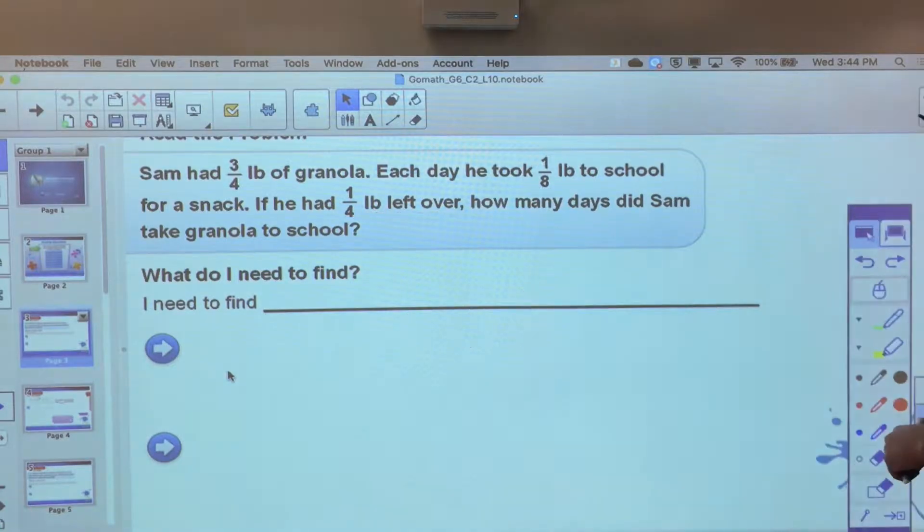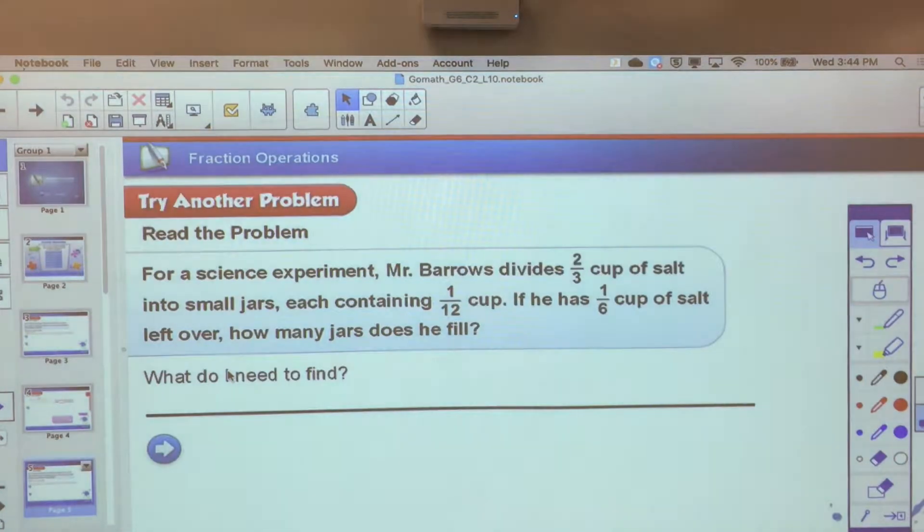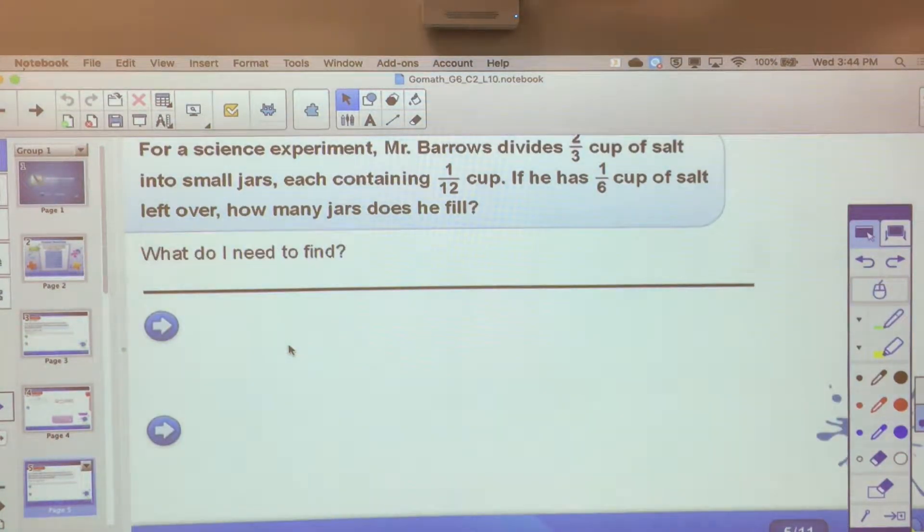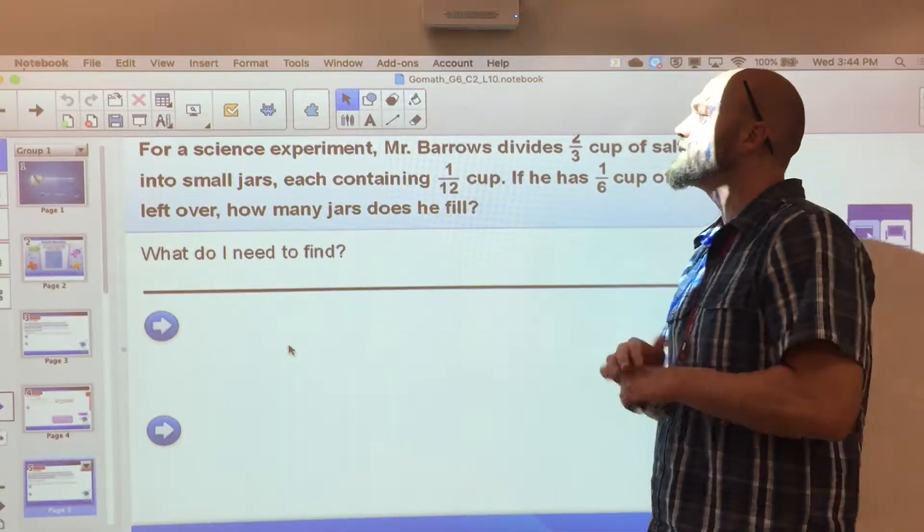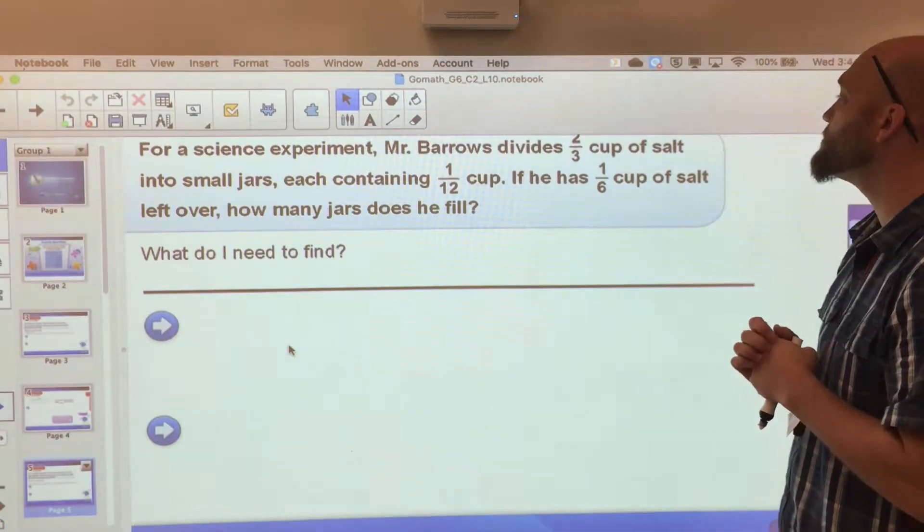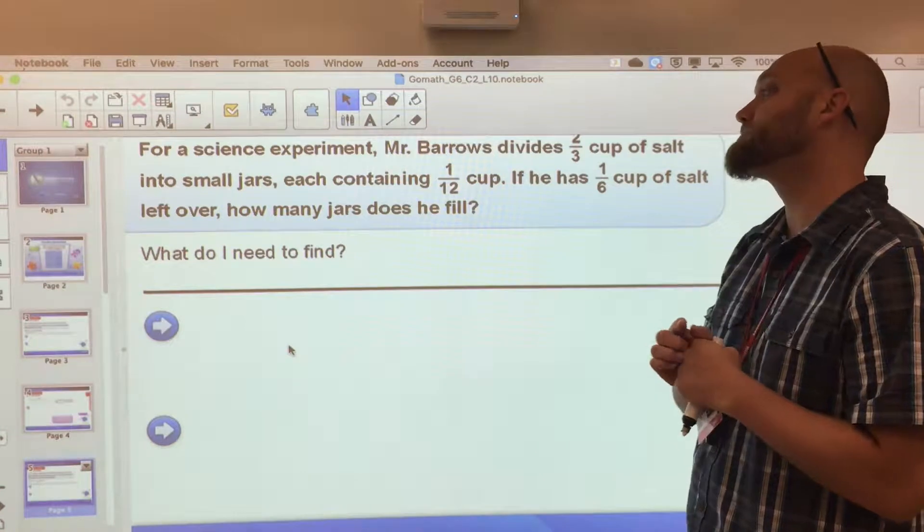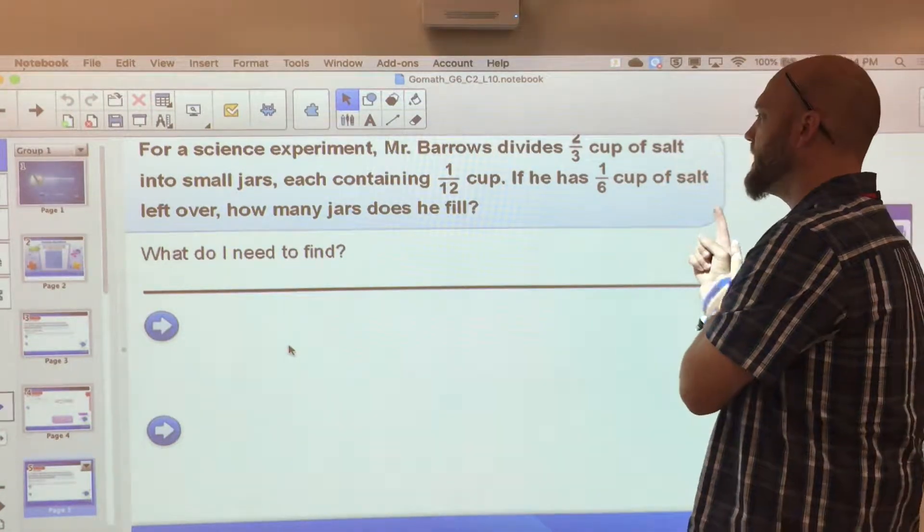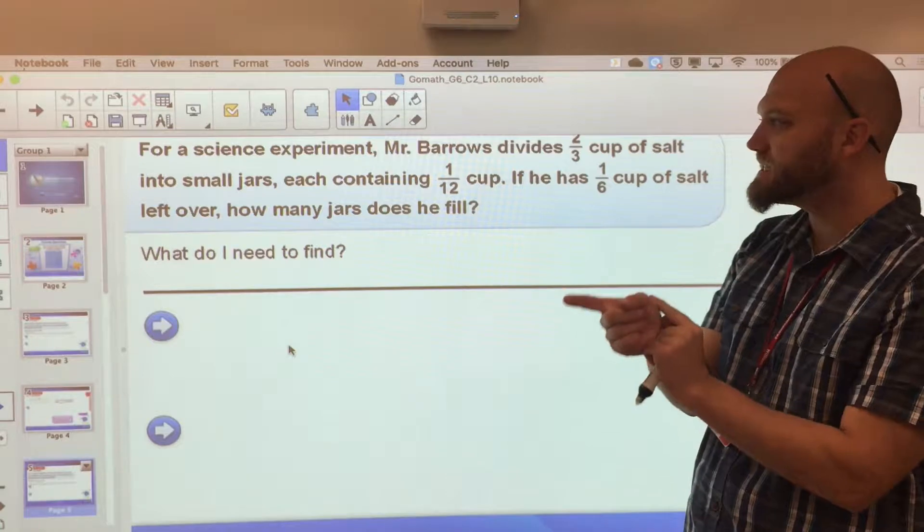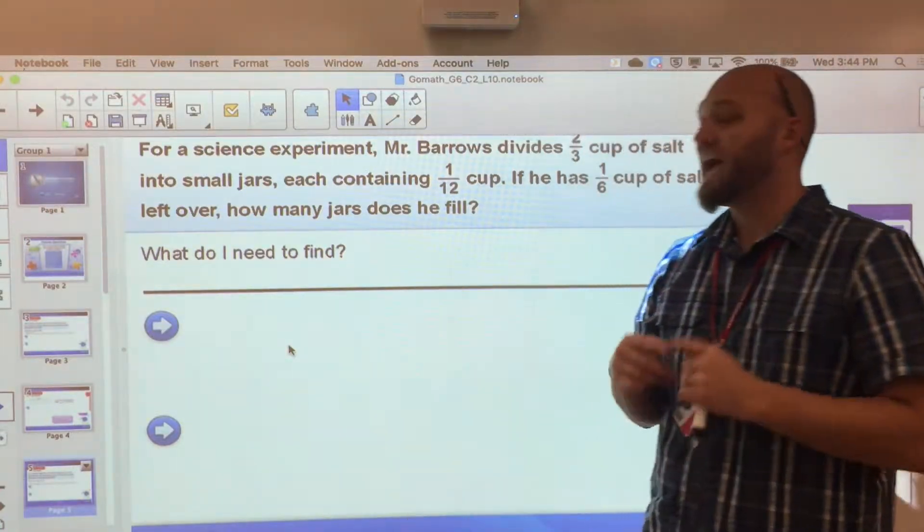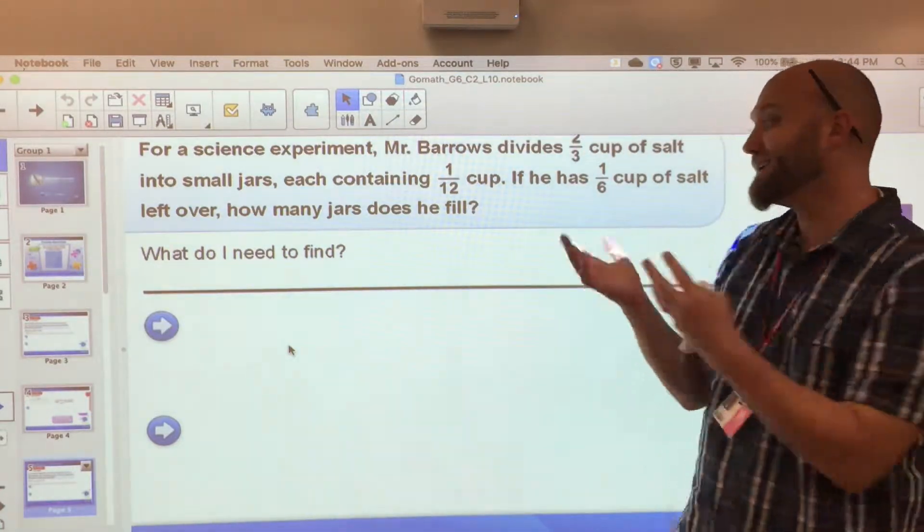For a science experiment, Mr. Barrows divides two-thirds of a cup of salt into small jars, each containing one-twelfth of a cup. If he has one-sixth of a cup of salt left over, how many jars does he fill?